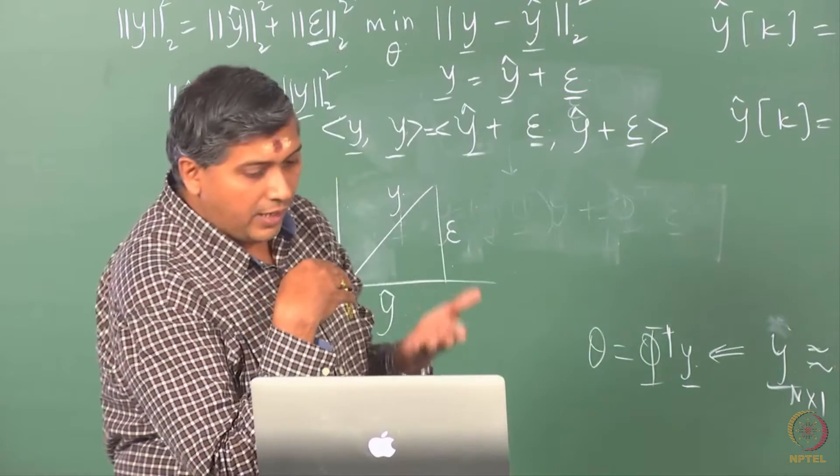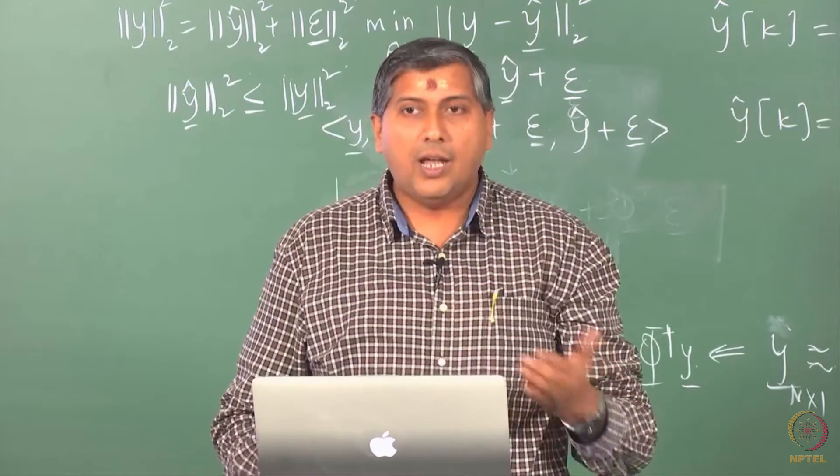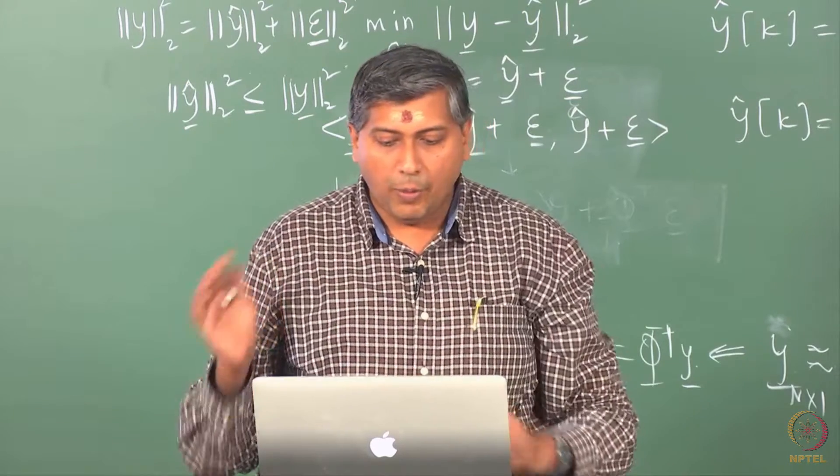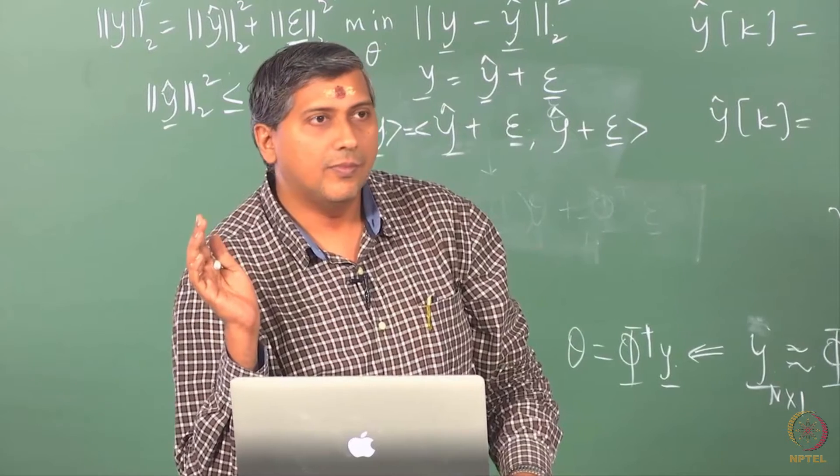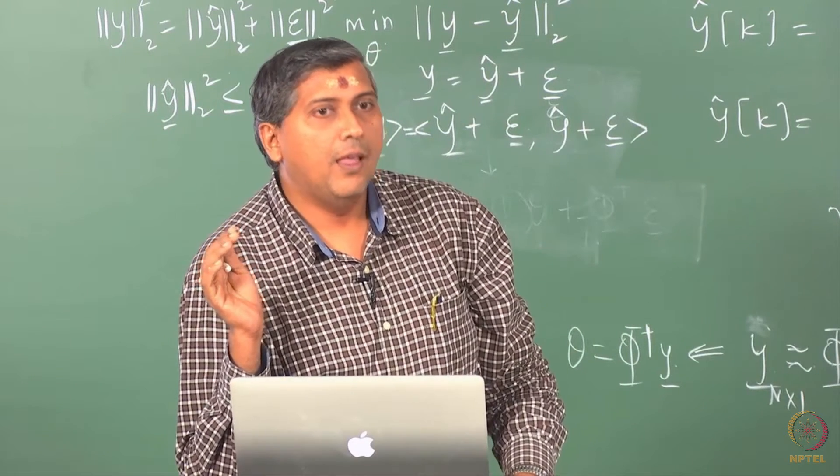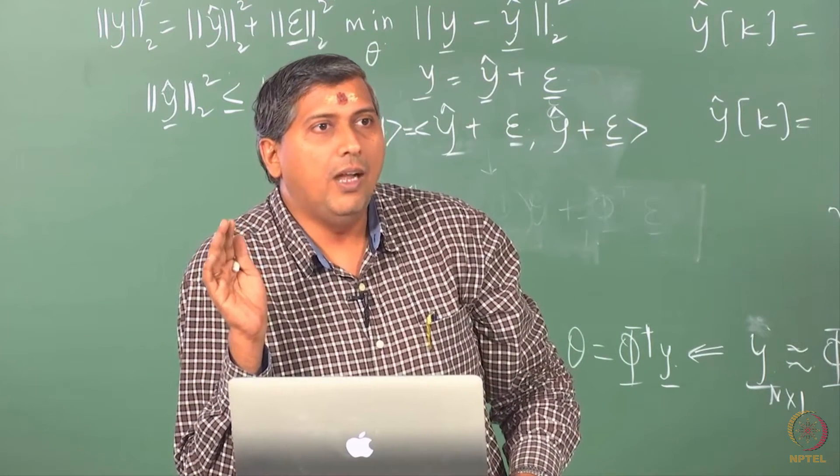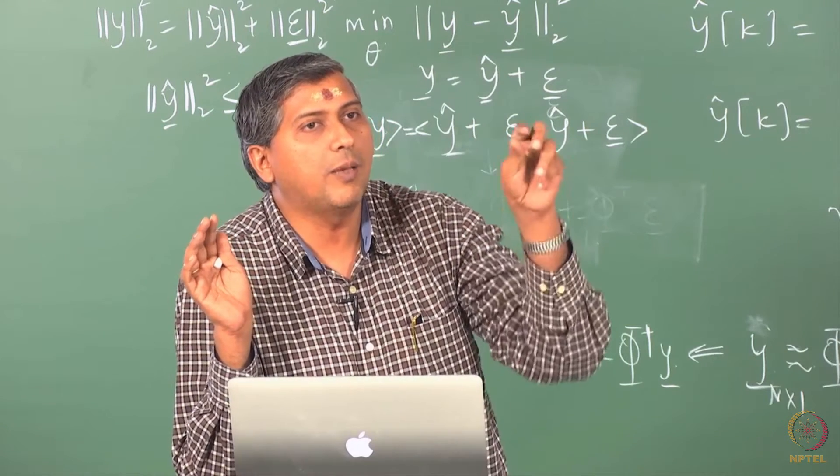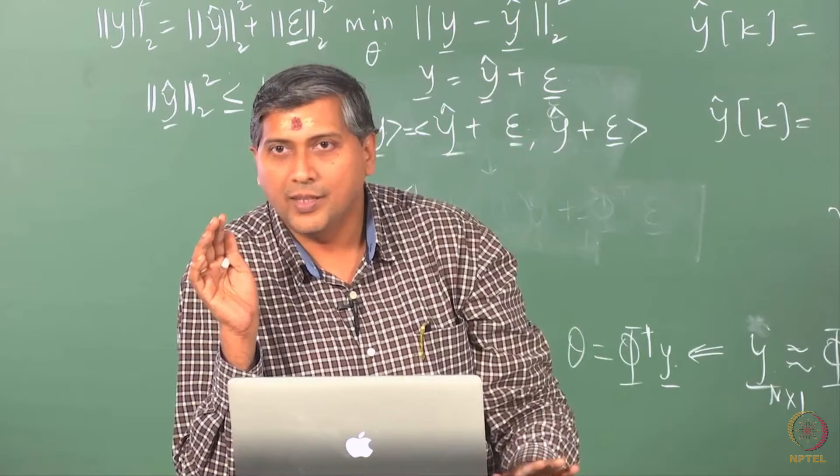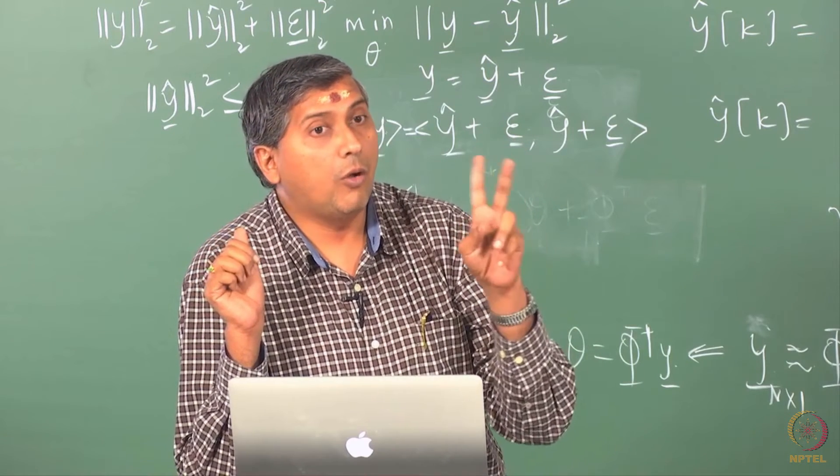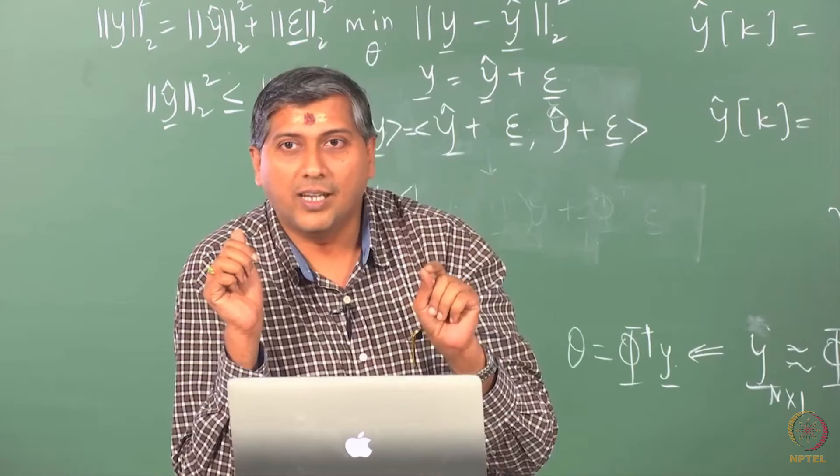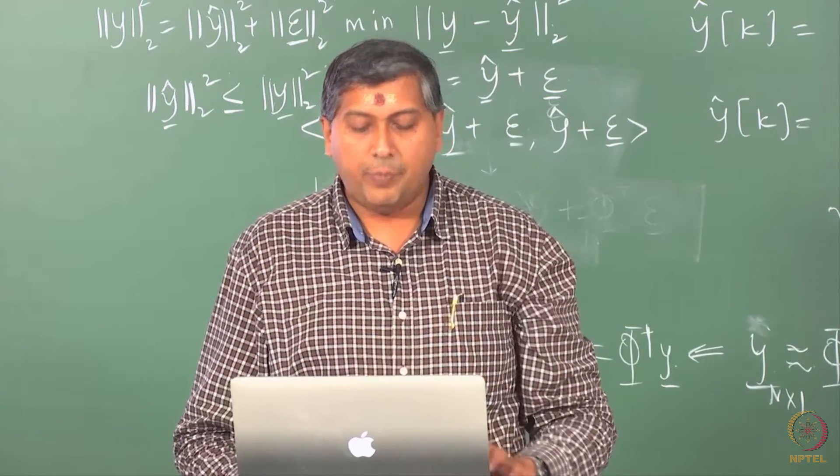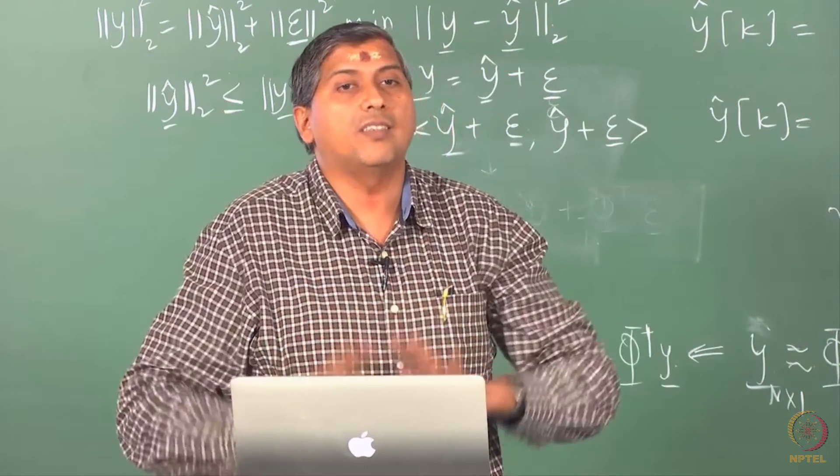So we are saying, let Y evolve as psi transpose K times theta naught plus Z, okay? Then we will impose conditions on Z. We say, let us assume Z to be some random signal, random process and we are also making a big assumption which is that the psi that we have in this DGP is the same set of regressors that I am using.